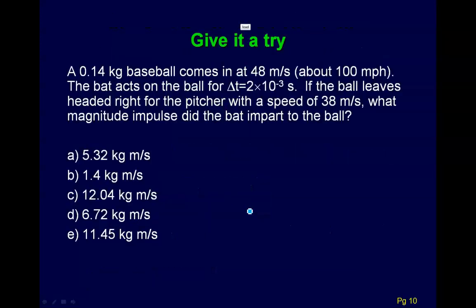So let's look at an example. Here we have an example where there's a baseball coming in at 48 meters per second, and it hits a bat. It's in contact for a certain time. If the ball leaves headed right for the pitcher with a speed of 38 meters per second, what impulse did the bat impart to the ball? Give this a try. Pause the video, and then we'll talk about this in a second.